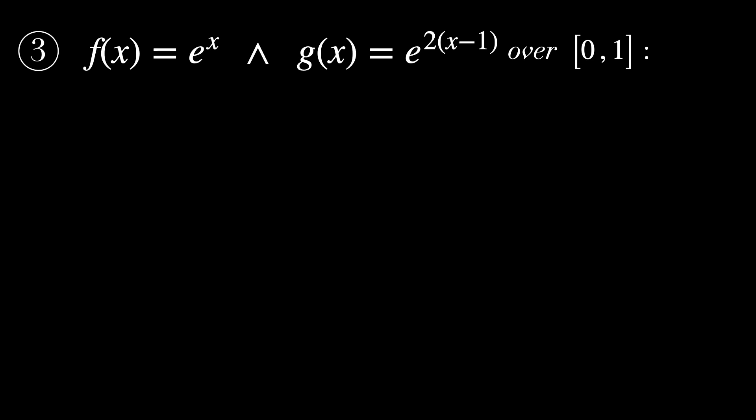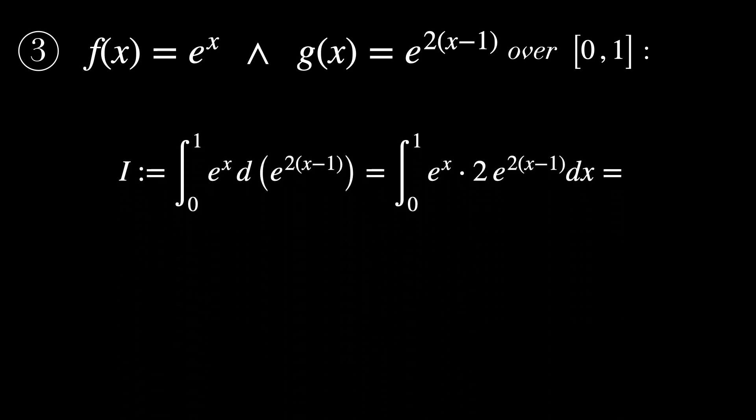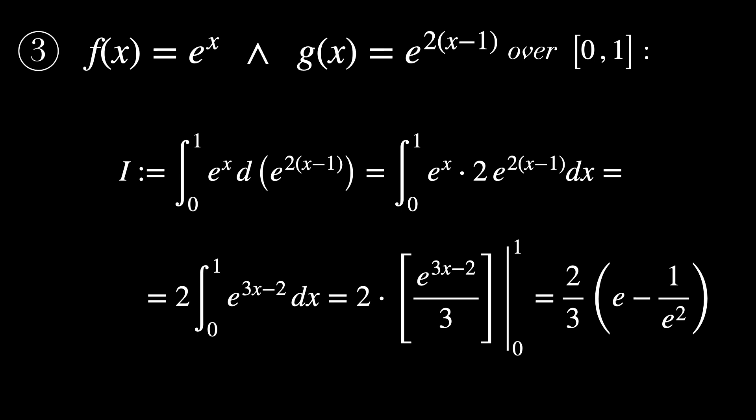Let's move to the third example now. f of x equals e^x, and g of x equals e^(2x) - 1, over the interval [0,1]. I now is defined as the Riemann-Stieltjes integral from 0 to 1 of e^x times d(e^(2x) - 1). Working on the math here, we get 2 times the integral of e^(3x) minus 2, which gives us 2/3 times (e - 1)/e².